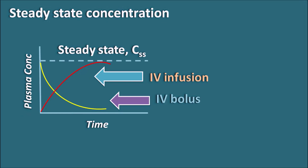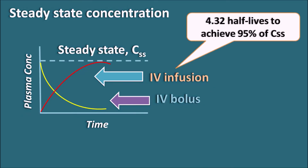When we give the drug by constant IV infusion, the steady state is achieved after a certain time and it is not achieved immediately. Particularly for an IV infusion, it takes around 4.32 half-lives to achieve 95% of the required steady state concentration. In this way, either IV bolus or IV infusion cannot maintain the steady state concentration at a constant level.